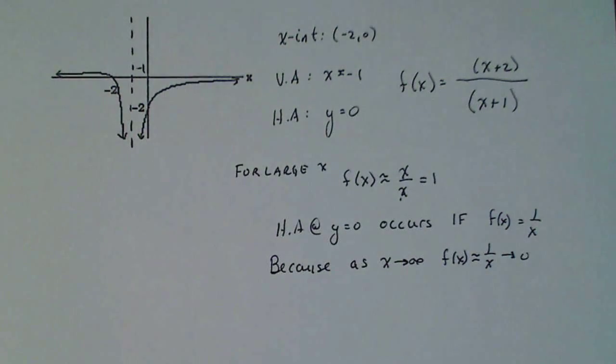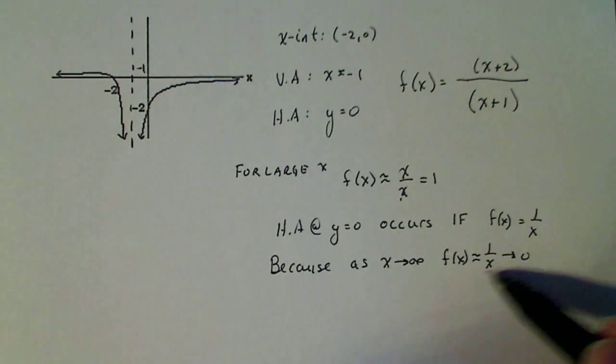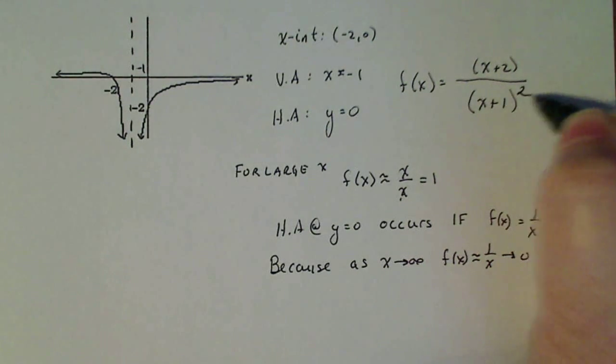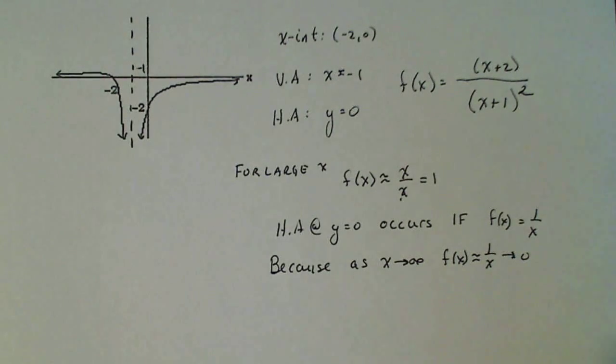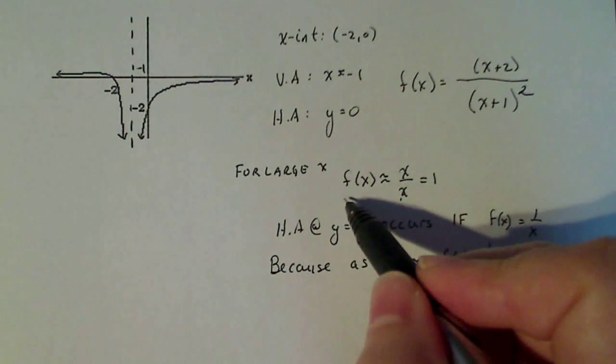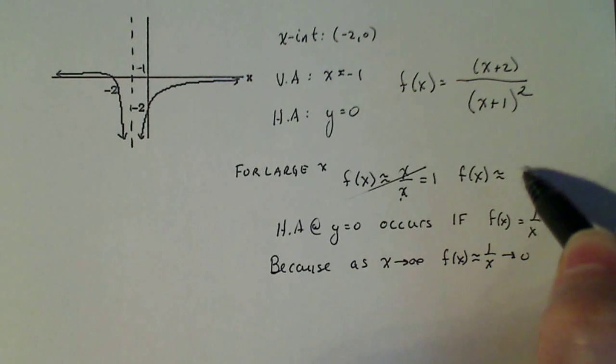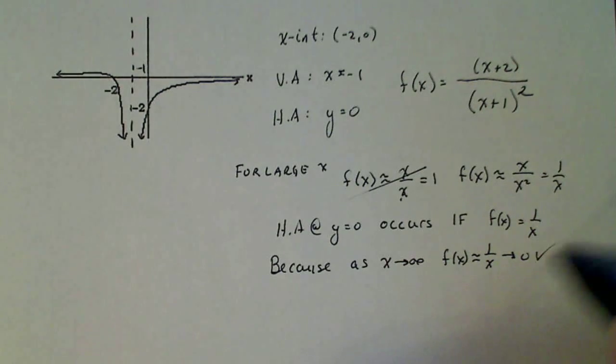So if we go back to the idea that I need my denominator to have a greater degree, let's just see what happens when I make this a two. So now this gives me a ratio that's approximately equal to x over x squared, which gives me that one over x, which is what I want.